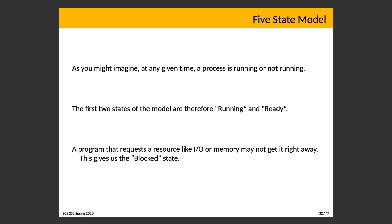At any given time a process has a certain state. In the simplest possible view, a process is either running or not running. If we develop a model of process state, the first two states are running and ready. That doesn't account for everything — a program that requests a resource might not get it right away, giving us the blocked state. So a process could be running, could be ready to run but waiting its turn, or could be blocked because it is missing some resource it needs.